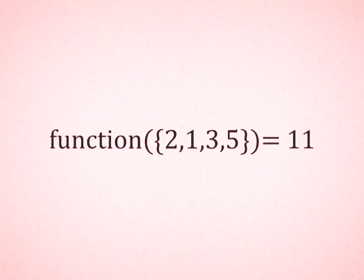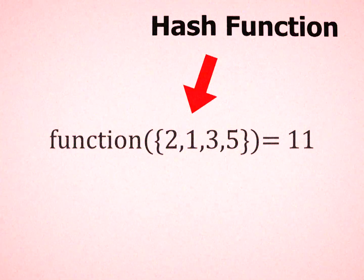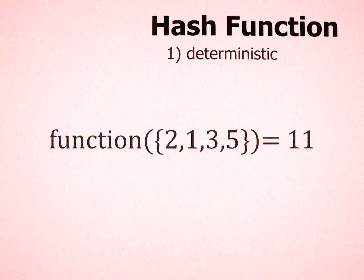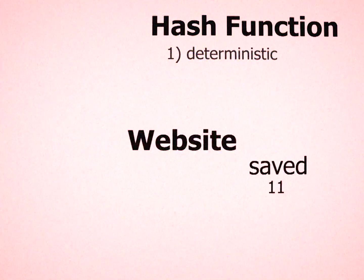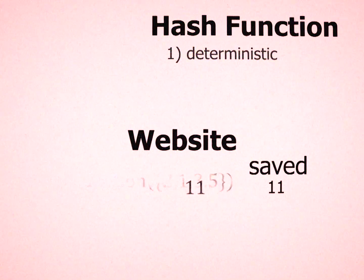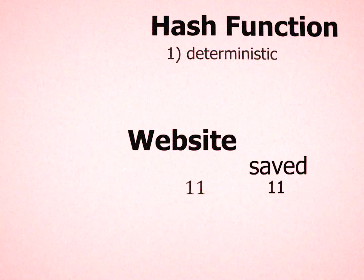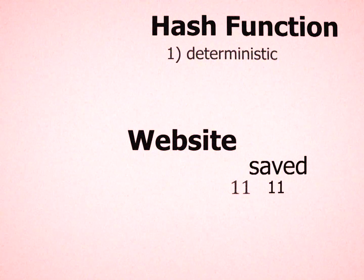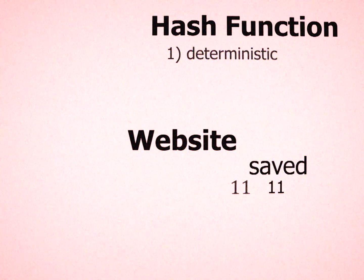We can call the thing that hashes our set a hash function. A hash function must be deterministic, meaning whenever you type your password, the website can hash it, which should produce the same hash, and then compare it with the previously saved hash to know that you know your stuff.